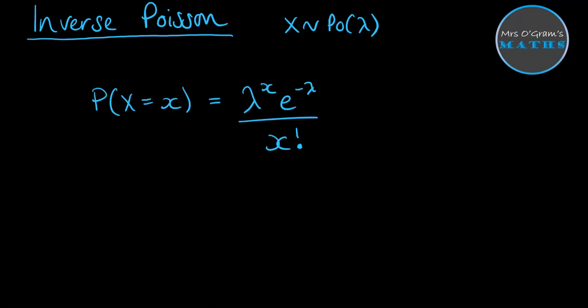A recap of the formula is this here. This is our formula for working out probabilities on a Poisson distribution. You know lambda, you do it to the power of the value you're working out that probability at, you multiply by e to the minus lambda and divide by x factorial, the value of the probability you're working out.